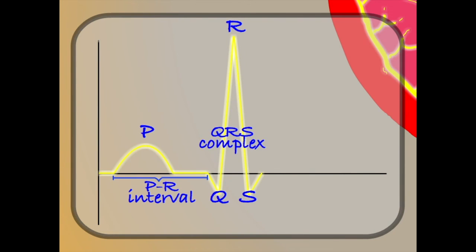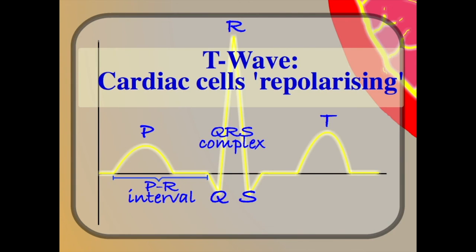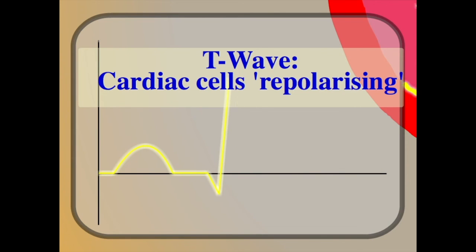There is one final bump at the end of the ECG complex known as the T wave. This can be thought of as the cardiac cells that have been involved in transmitting the electrical impulse resetting themselves, ready to transmit again. The more technical name for this is repolarisation. And that's our ECG complex.